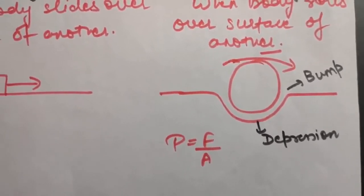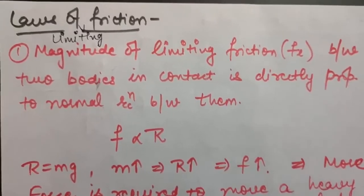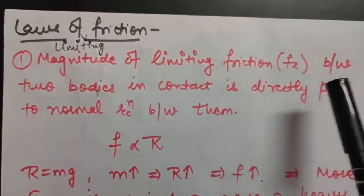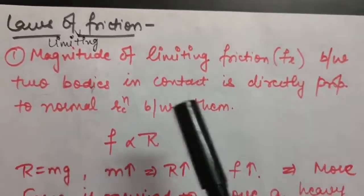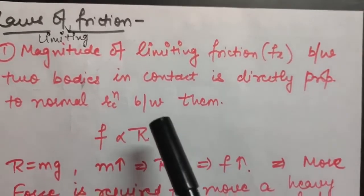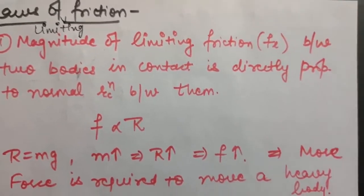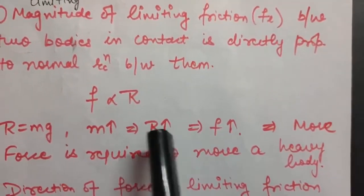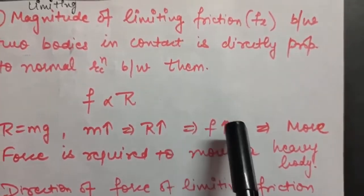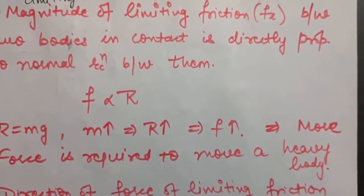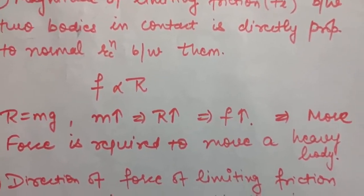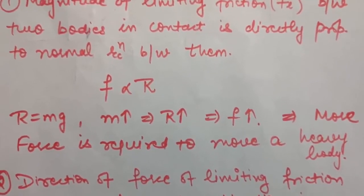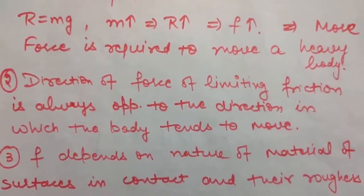Now we start with the laws of limiting friction. The first law states that the magnitude of limiting friction between any two bodies in contact is directly proportional to the normal reaction between them — that is, F is directly proportional to R. Since R equals mg, as the mass of the body increases, normal reaction increases, so the force of friction also increases. Greater the mass, greater the force required to move the body.